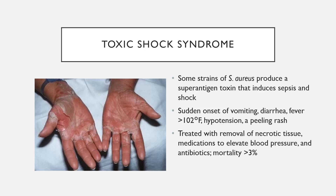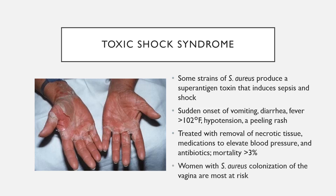Toxic shock syndrome is typically treated with removal of necrotic tissue, medications to elevate blood pressure, and antibiotics. The mortality rate is around 3%. It can arise from various infections throughout the body — skin or respiratory — but the people most at risk are women with existing colonization of S. aureus in the vaginal canal who use tampons, diaphragms, or contraceptive sponges left in too long, which can foment infection and toxin buildup.